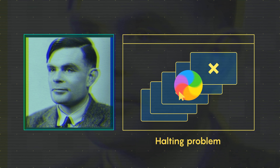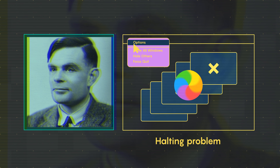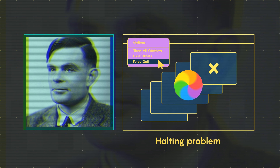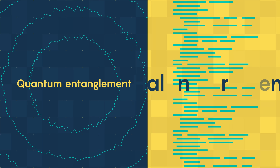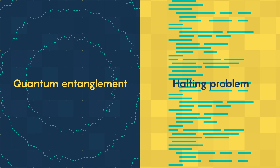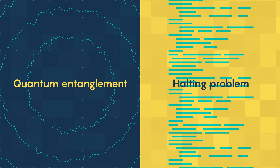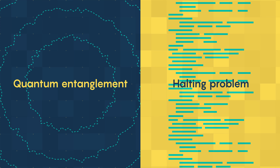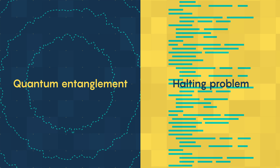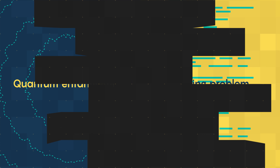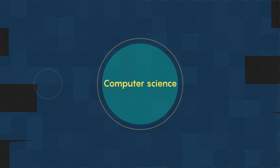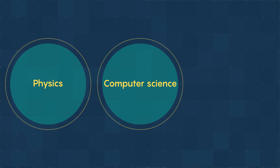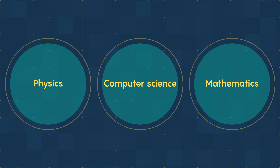Today, we recognize it in the spinning wheel of death. In the 1930s, quantum entanglement and the halting problem seemed to have nothing to do with each other. But this year, they combined in a landmark proof that set off a cascade of solutions to open problems in computer science, physics, and mathematics.